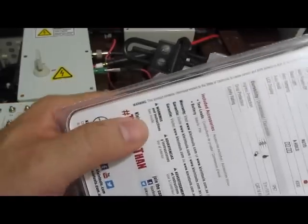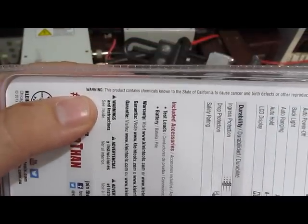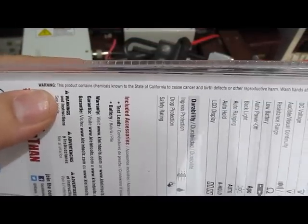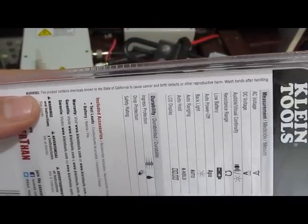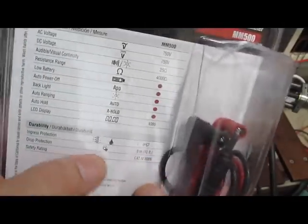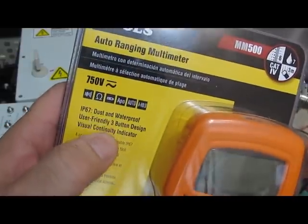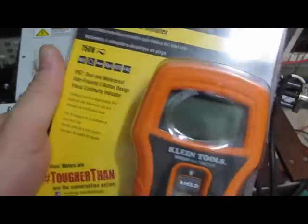It looks funky. Of course this meter has chemicals that is known in the state of California to cause cancer. Drop rating, 10 feet, dust and waterproof. Yeah, we'll see.